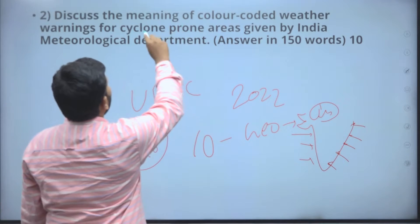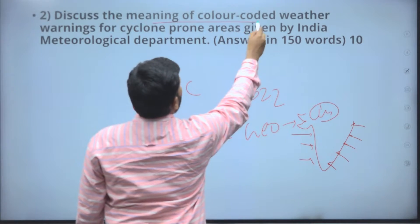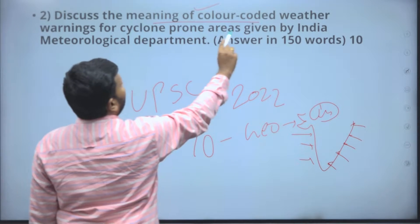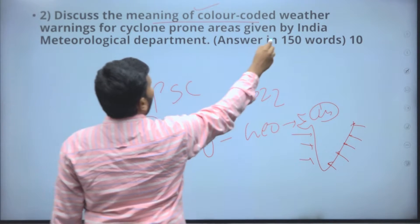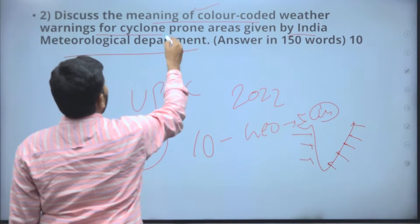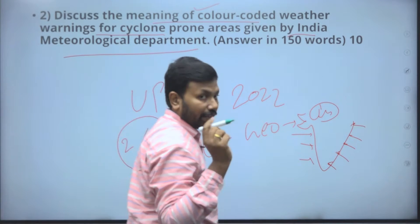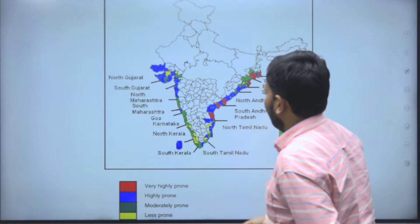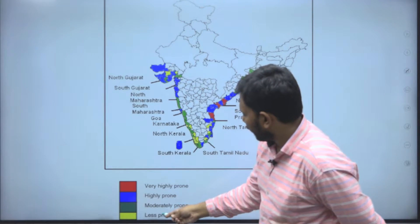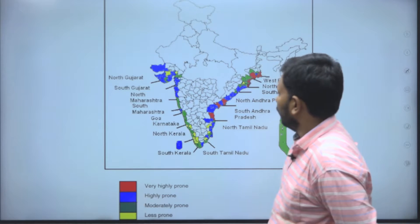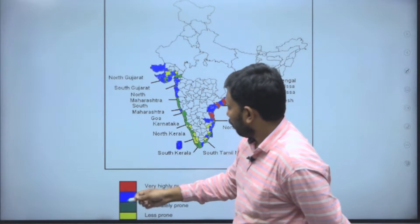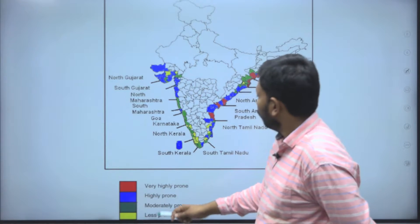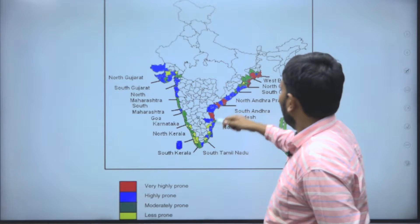The stress points of your answer are: the meaning of color-coded warnings as given by IMD (Indian Meteorological Department), and the warning system for cyclones. On your India map: less prone areas are shown in low color, moderately prone in slight green, high prone in blue, and very high prone in red.